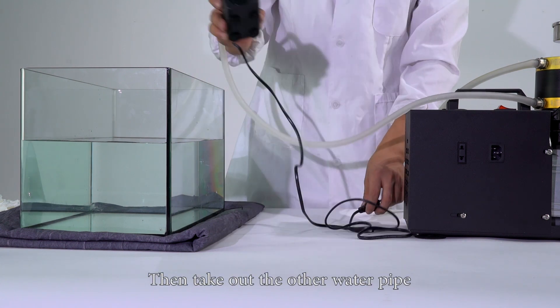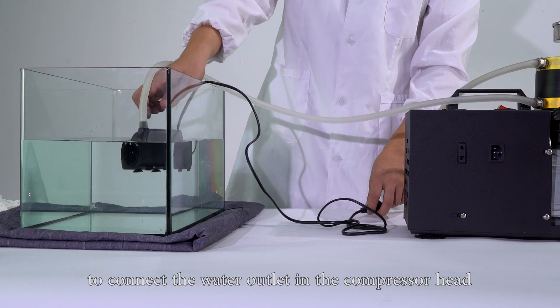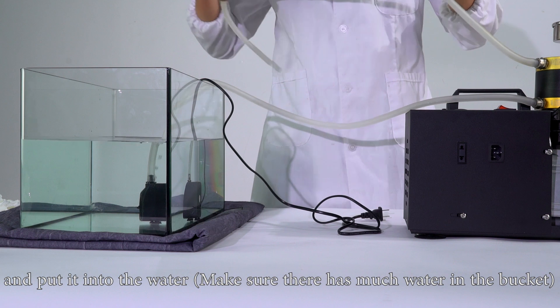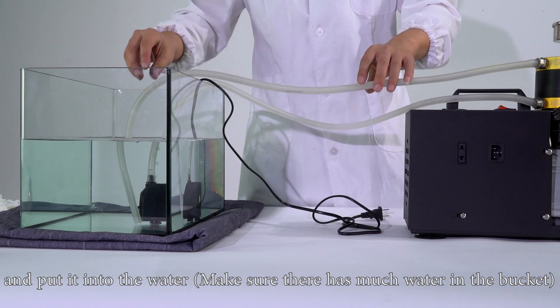Then take out the other water pipe to connect the water outlet in the compressor head and put it into the water. Make sure there is much water in the bucket.